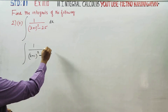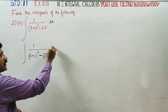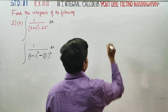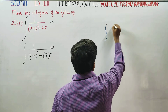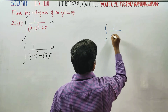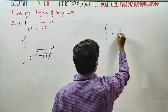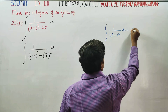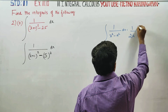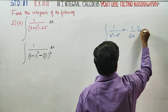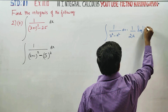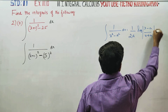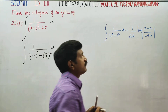We have a readymade formula for x square minus a square. The integration of 1 by (x square minus a square) dx is equal to 1 by 2a, logarithm of (x minus a) by (x plus a).